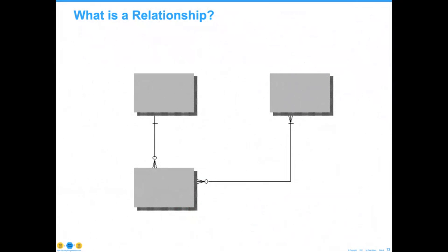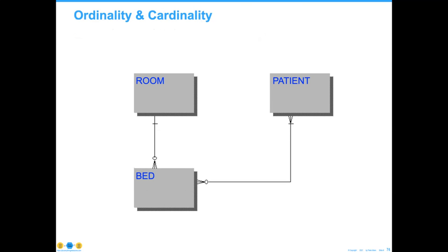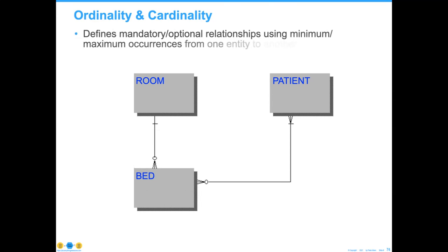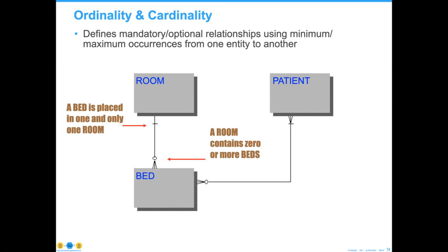In a data model, you have relationships — a natural association between two or more entities. Ordinality defines the mandatory or optional relationships. A bed must have a room, but a room does not necessarily need a bed. A room can contain zero or more beds. This is important because if we specify the foundation of a piece of software, that rule will be in place until the system is no longer in service. If you make a decision here that is poor because you've been given bad requirements, that mistake will likely go on with the system.